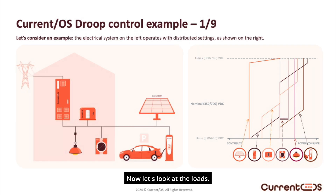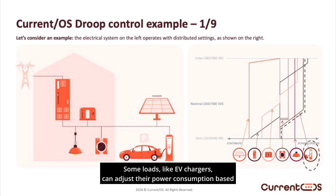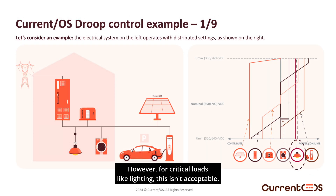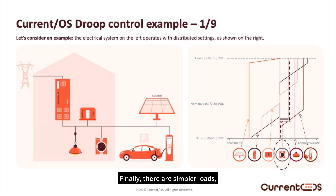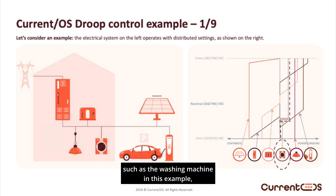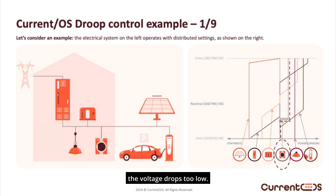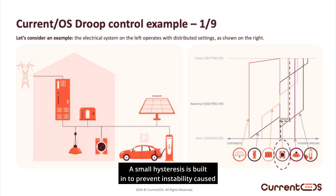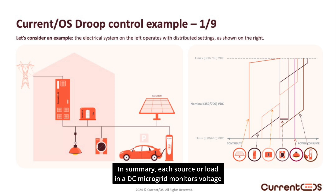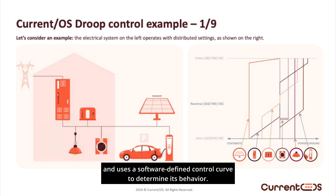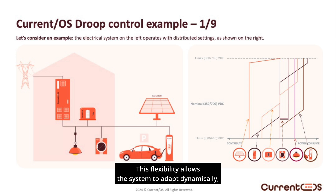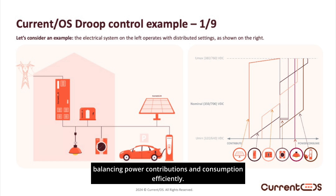Now let's look at the loads. Some loads, like EV chargers, can adjust their power consumption based on the available voltage. However, for critical loads like lighting, this isn't acceptable — they must operate at nominal power across the entire voltage band to ensure uninterrupted functionality. There are also simpler loads, such as a washing machine, which do not have gradual power adjustment. They operate at nominal power and stop entirely when the voltage drops too low. A small hysteresis is built in to prevent instability caused by frequent starts and stops. In summary, each source or load in a DC microgrid monitors voltage and uses a software-defined control curve to determine its behavior, allowing the system to adapt dynamically and balance power contributions and consumption efficiently.